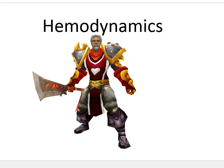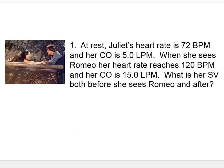Our first homework problem is about Romeo and Juliet. At rest, Juliet's heart rate is 72 beats per minute and her cardiac output is 5 liters per minute. But when she sees Romeo, her heart rate jumps up to 120 beats per minute and her cardiac output jumps to 15 liters per minute. We're tasked with calculating her stroke volume both before and after she sees Romeo.